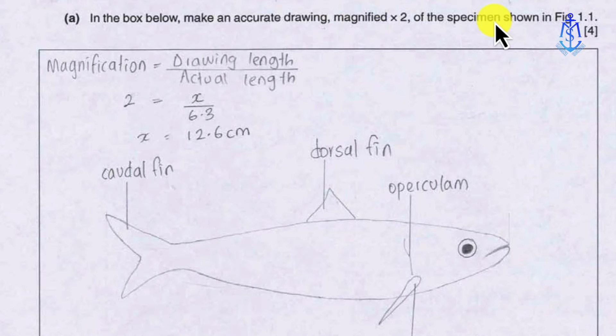The initial step is to establish the formula for magnification, which is drawing length divided by actual length. Given the magnification of 2 and the unknown drawing length, set up the equation as x divided by 6.3 for the actual length of 6.3 cm.